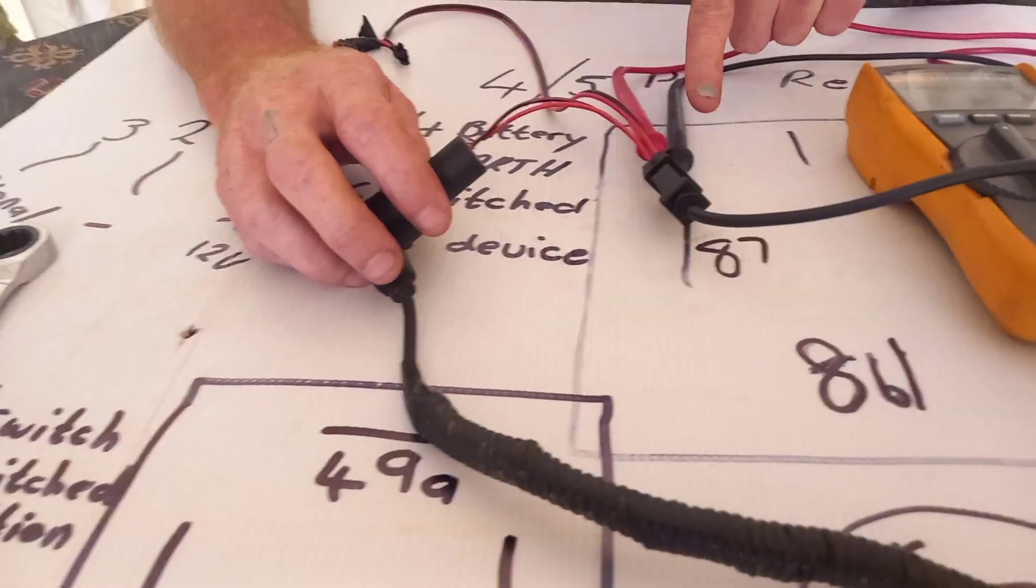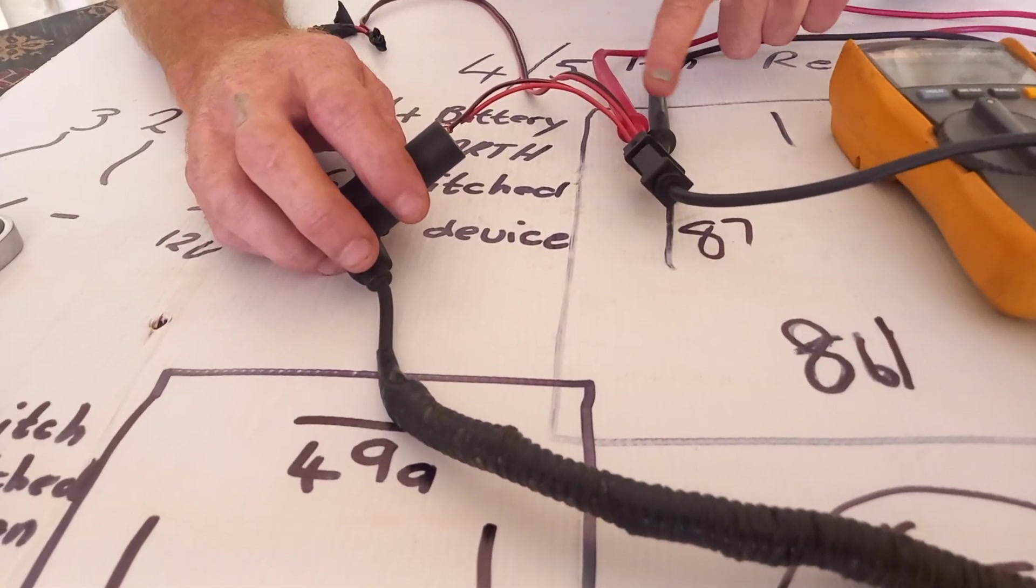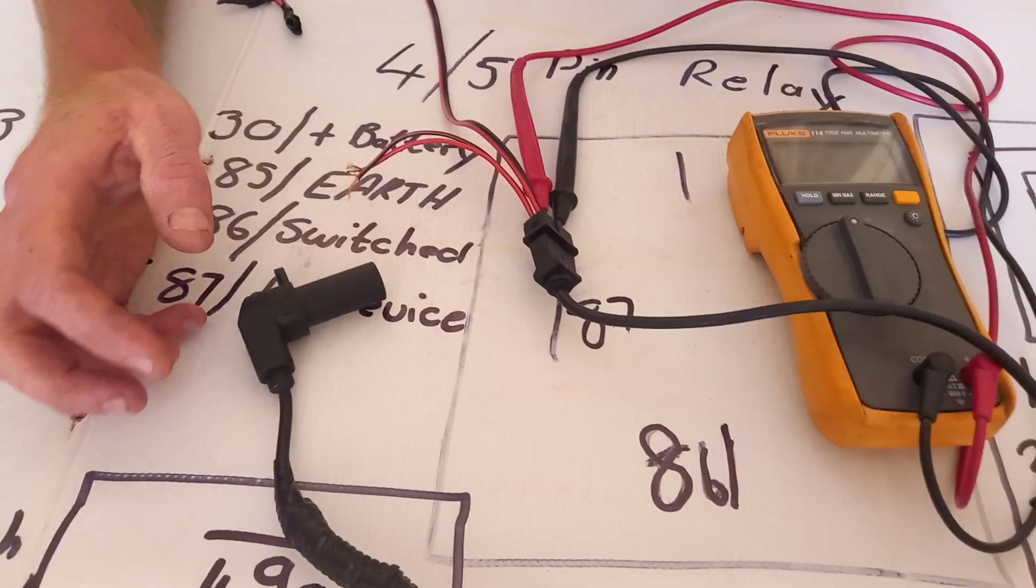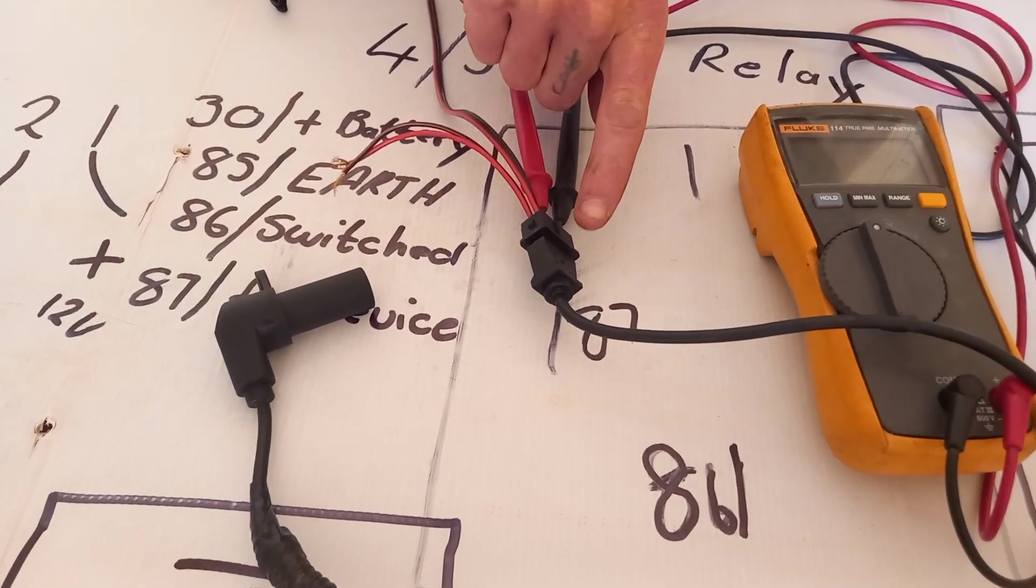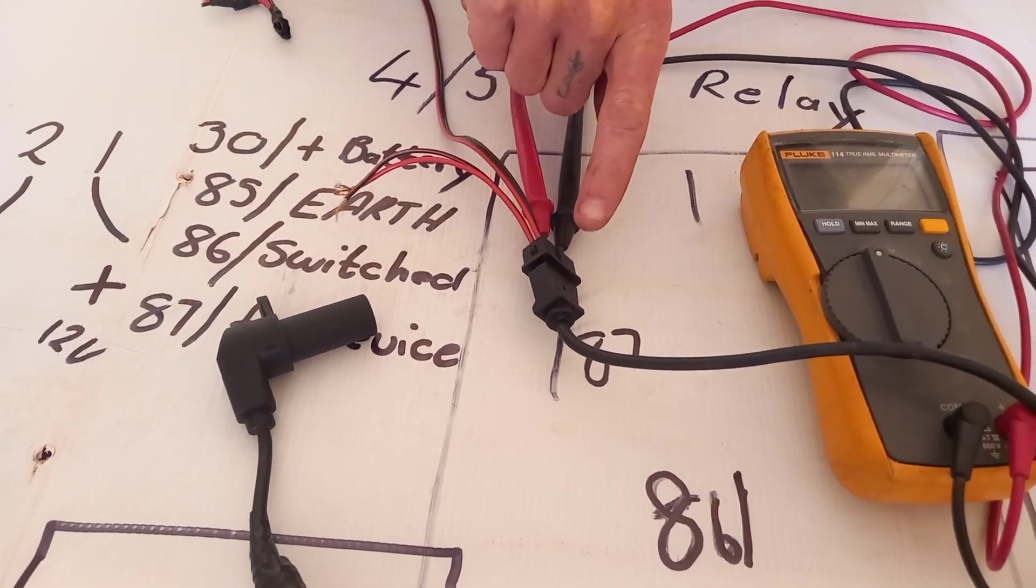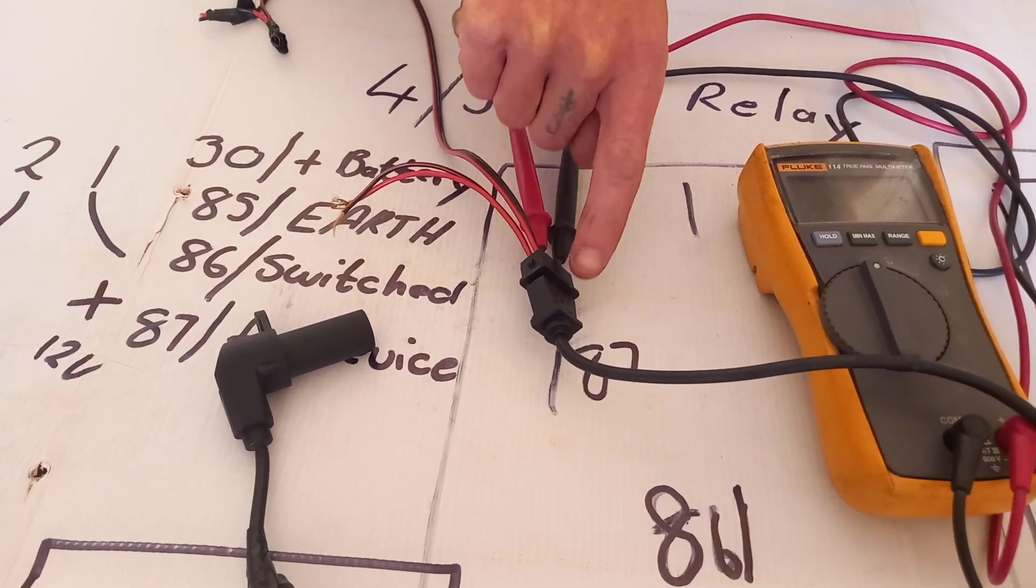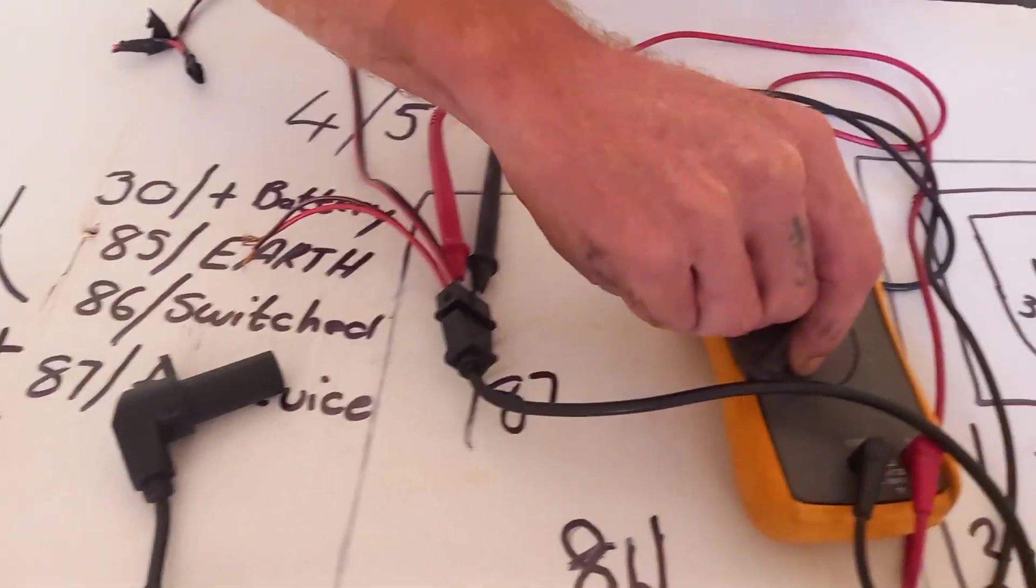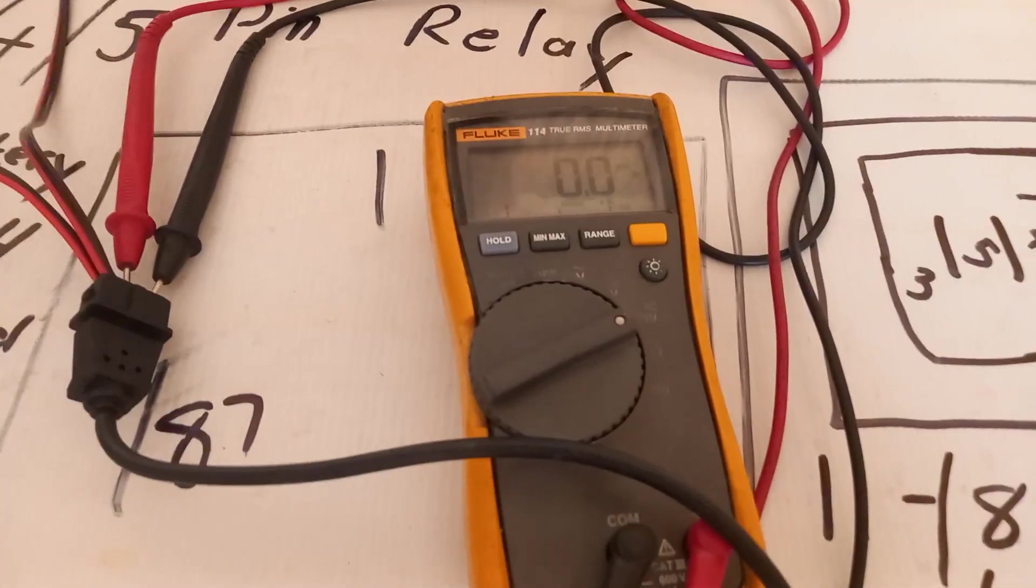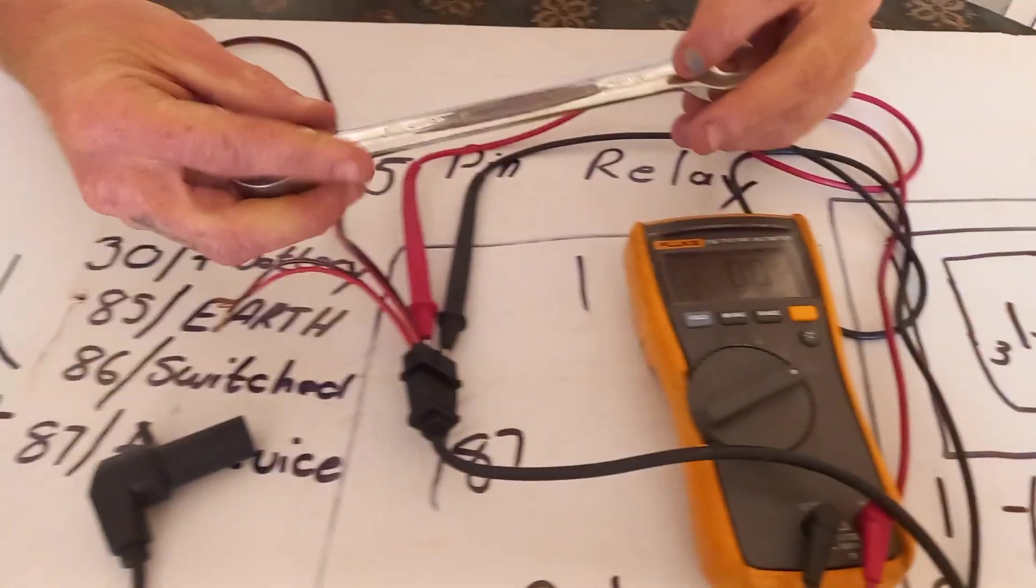I hooked up the probes of the multimeter here to the wiring. There's a numbering on here, one and two, and this is a three pin. So I put it on number one and two, and I'm going to put it first on millivolts.